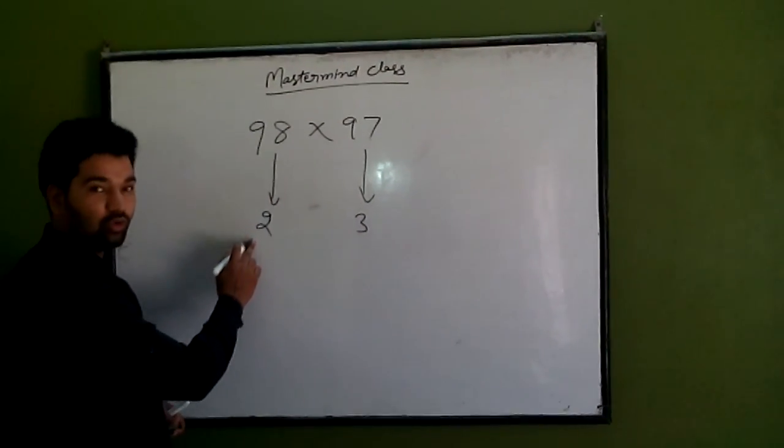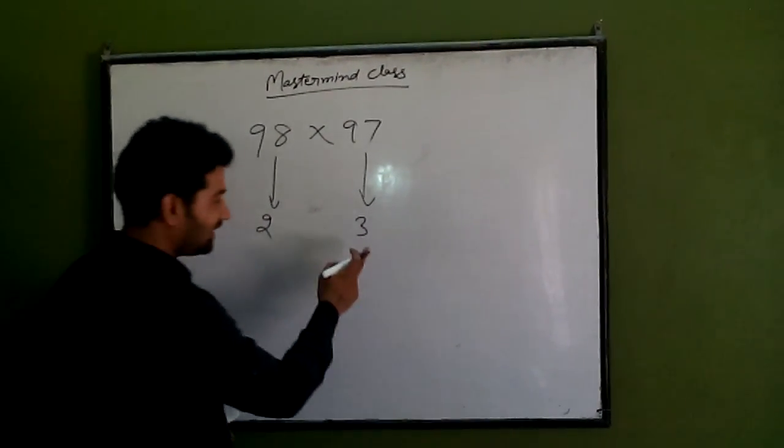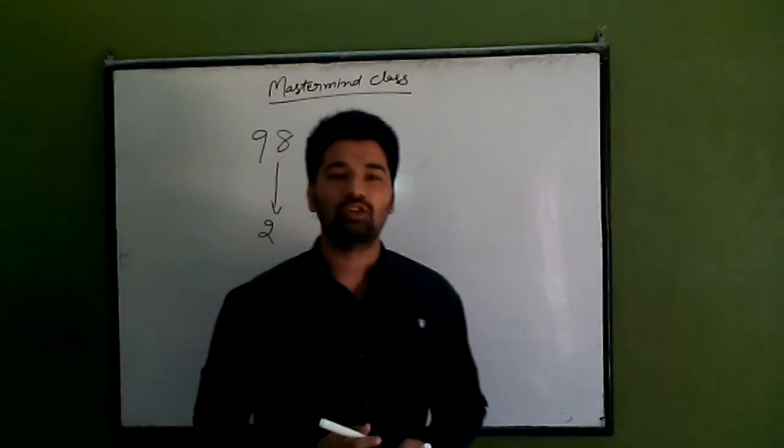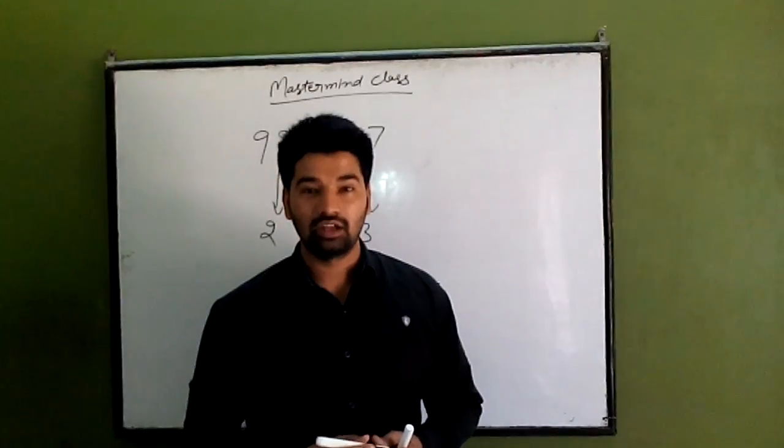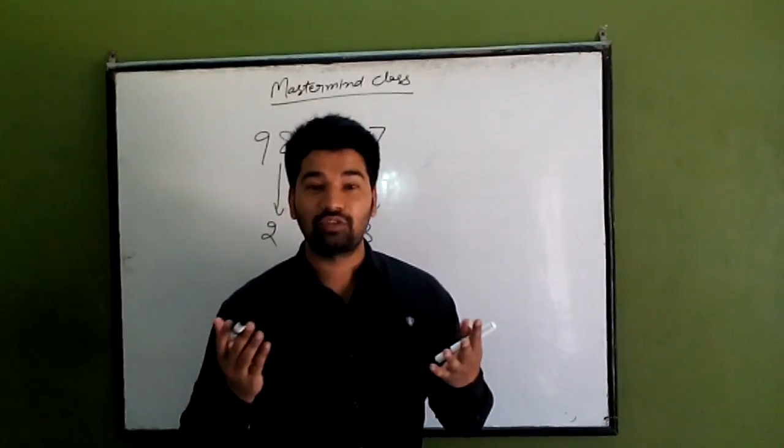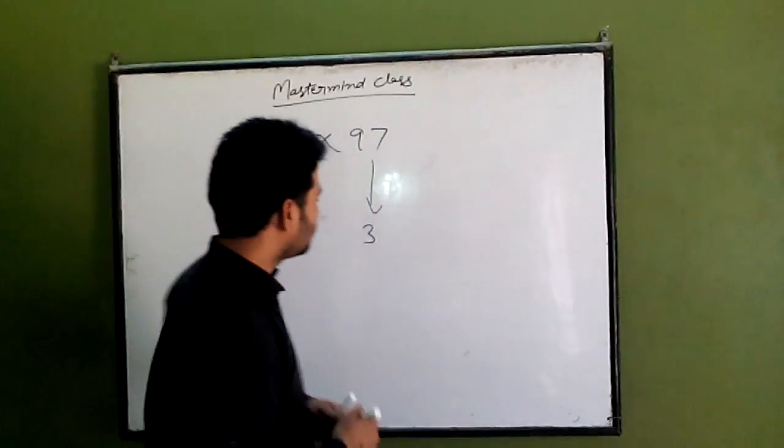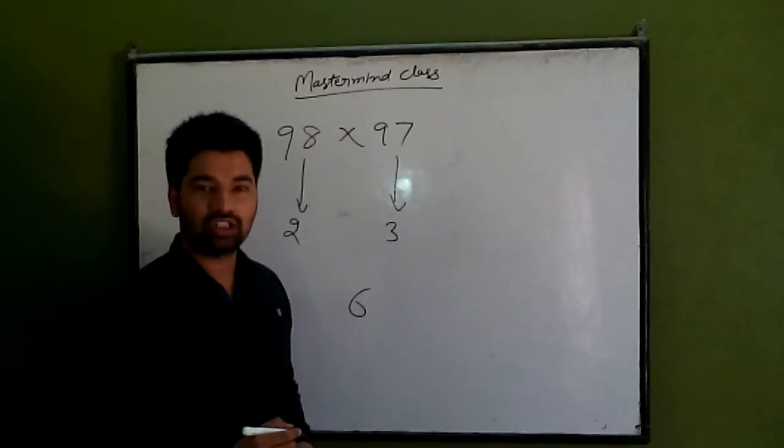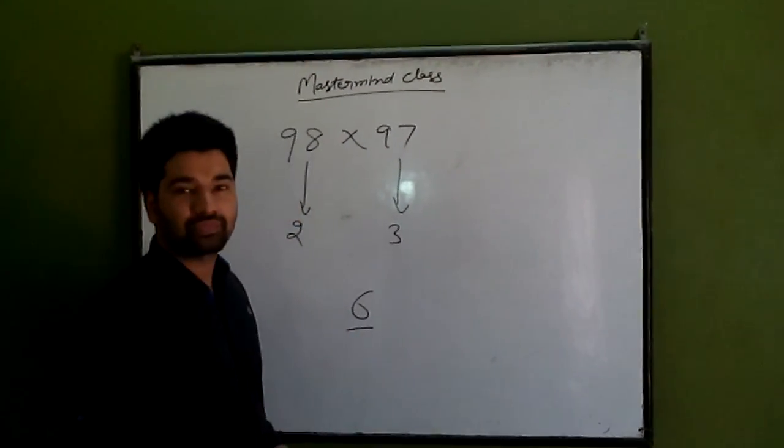98 is 2 less than 100, 97 is 3 less than 100. So what is the multiplication of 2 x 3? Tell me, what is the multiplication of 2 x 3? So 2 x 3 is 6.